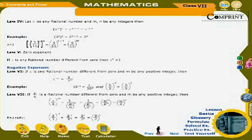Law 4: Let x be any rational number and m and n be any integers. Then (x^m)^n = x^(m×n) = x^(mn). Example: (2³)² = 2⁶, and (3/11)⁵ raised to the power 4 = (3/11)^(5×4) = (3/11)²⁰.